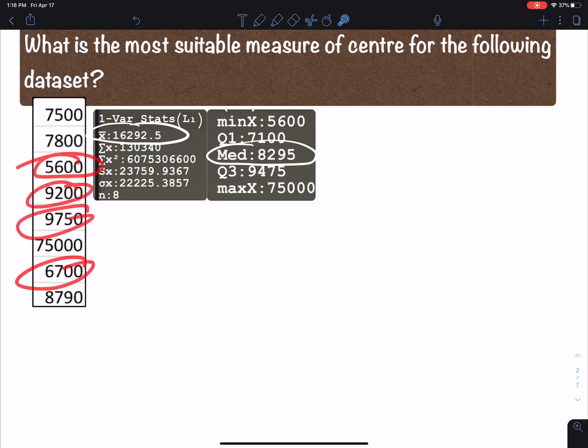And 75,000. Now the majority of these values are less than 10,000. So 16,000, does that seem like a good measure of the center or does 8000 seem like a better measure of the center? Well the answer is 8000 because the majority of these values are less than 10,000. So 8000 is a better representation of the center.